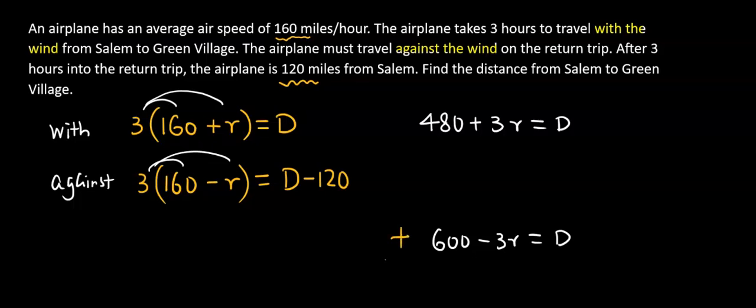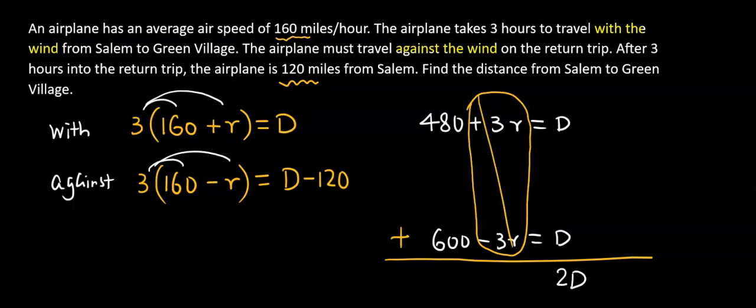Did you see you have a positive and a negative 3r? A pair of opposites they cancel out each other. And then we have d plus d is 2d. And then 480 plus 600 that's 1080. And then we're going to divide by 2, divide by 2 each side.